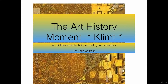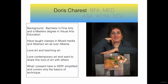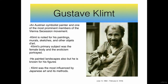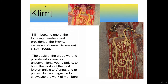Klimt is a very famous artist that uses design and pattern, and we'll see how he does this. My name is Doris Charest. I have a lot of experience teaching and I have a few videos out there for you to watch, but this one is special. We're going to talk about Gustav Klimt, an Austrian symbolist painter who painted the most beautiful figures with dresses and patterns like you've never seen before.